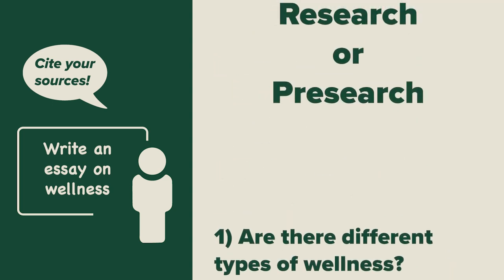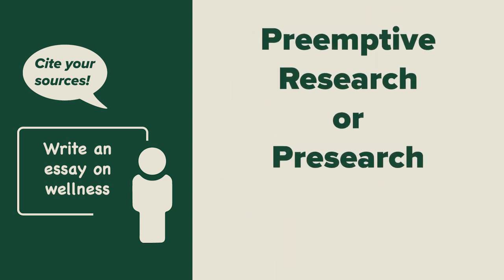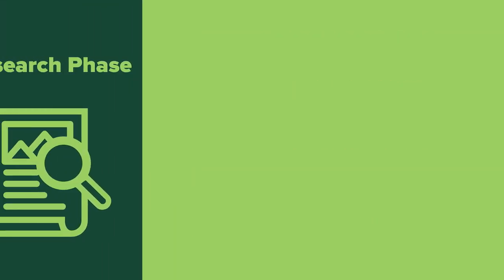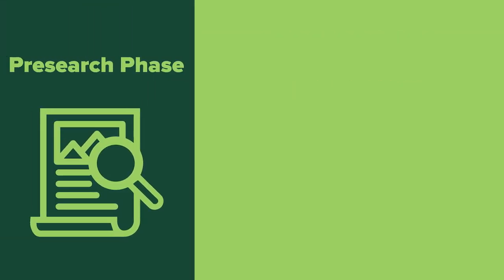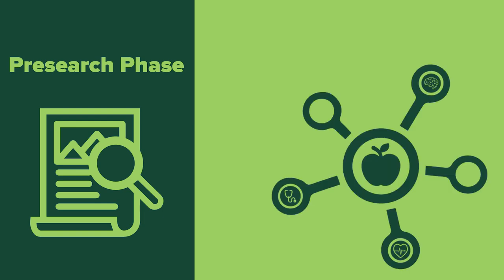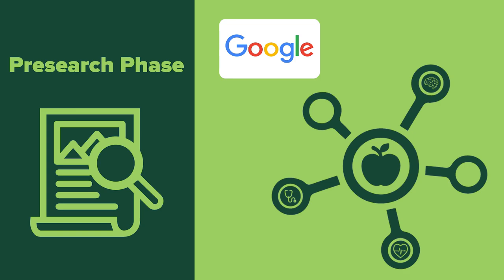This initial step is called preemptive research, or pre-search. This is the phase of a research project where you find out more information like related terms and concepts. The most common pre-search tool is Google.